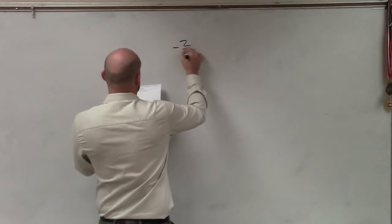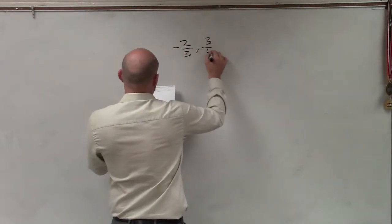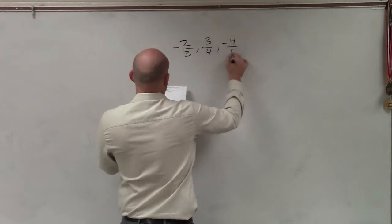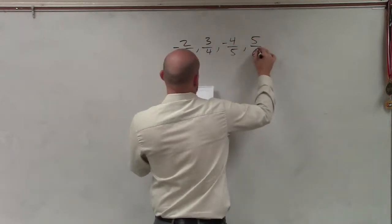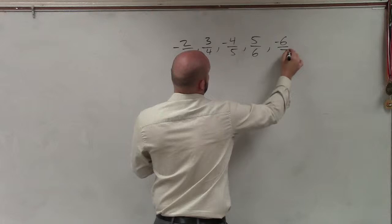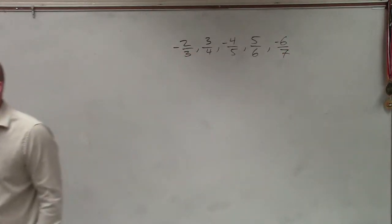Actually, Dara, if I could borrow yours, is this the correct rule? So we have a sequence of numbers: negative two-thirds, three-fourths, negative four-fifths, five-sixths, and negative six-sevenths. And they're asking us to determine the rule.